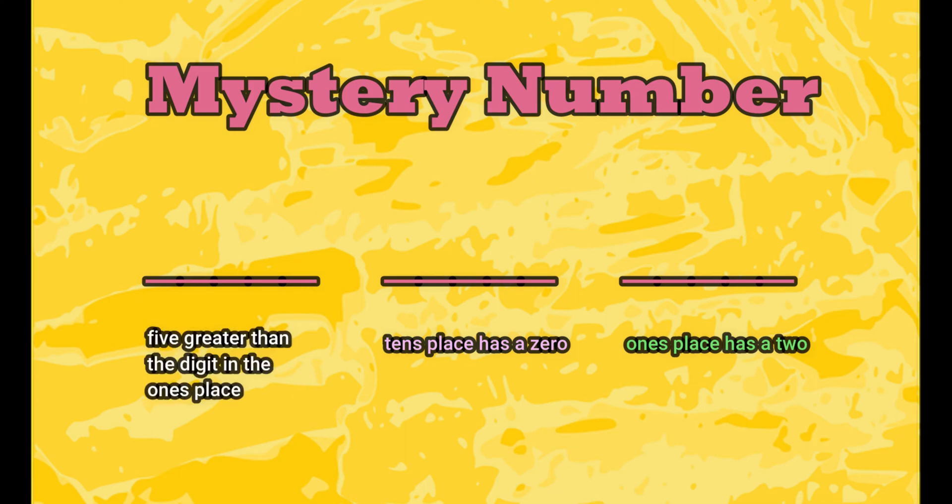The mystery number has three digits. The tens place has a zero. The ones place has a two. The hundreds place has a digit that is five greater than the digit that is in the ones place. Did you get it? The mystery number is 702.